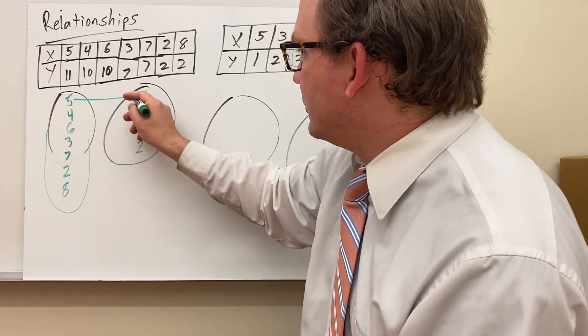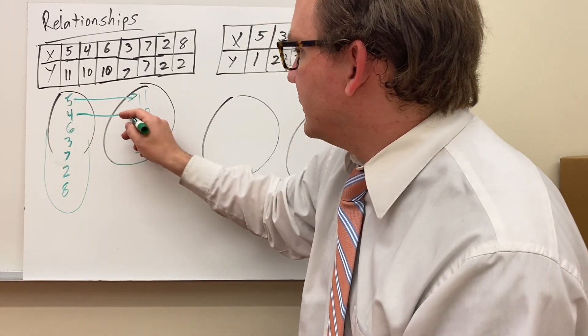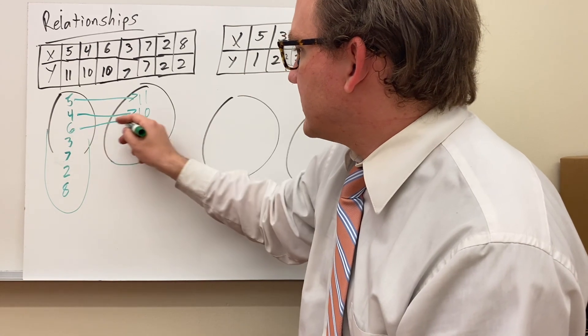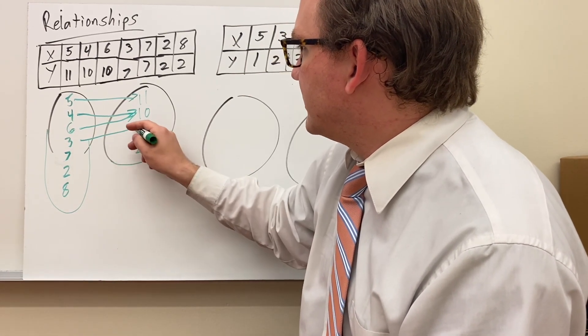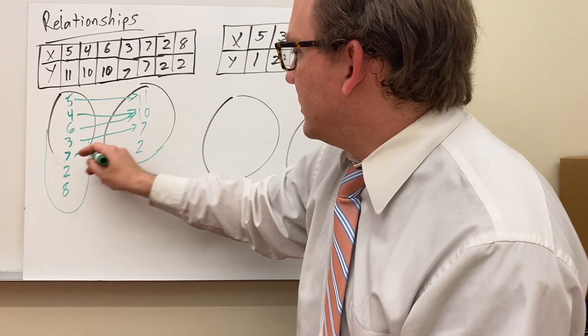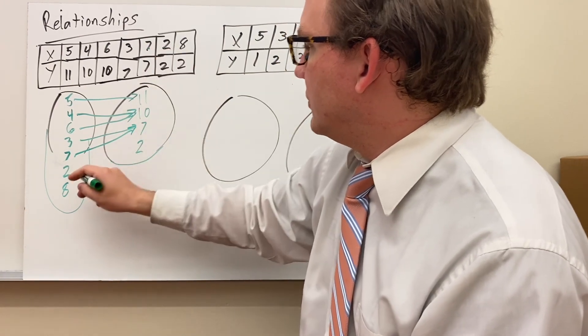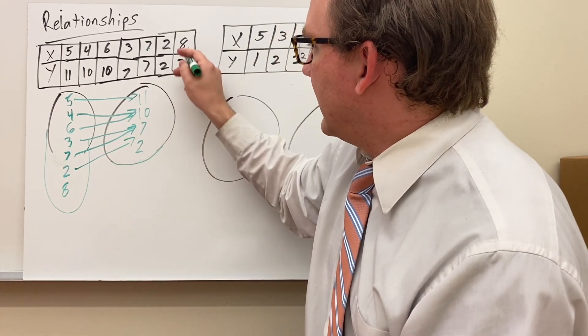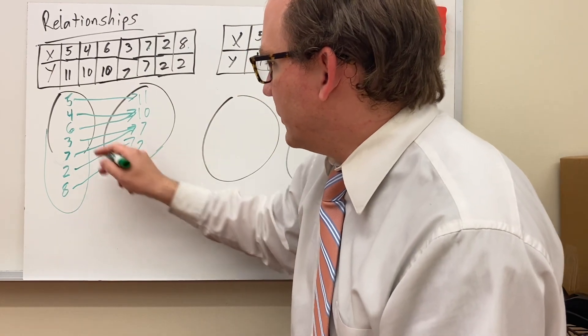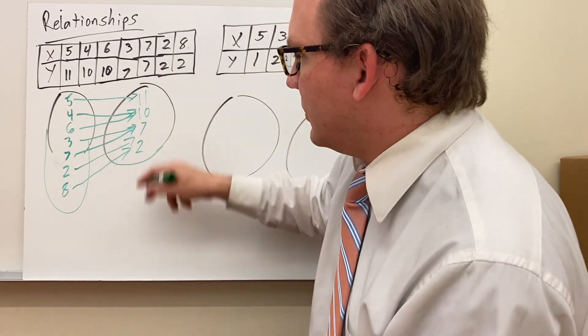That's fine. Y-values can repeat. 5 goes to 11, 4 goes to 10, 6 goes to 10, 3 goes to 7, 7 goes to 7 as well, 2 goes to 2, and 8 goes to 2. So each input has only one output, so therefore this is a function.